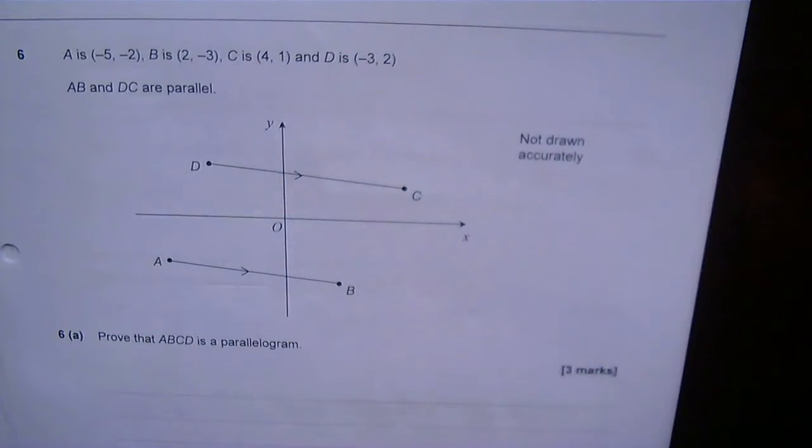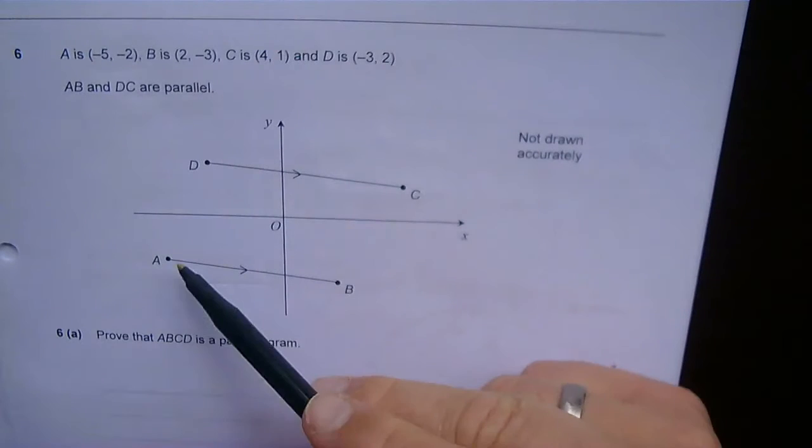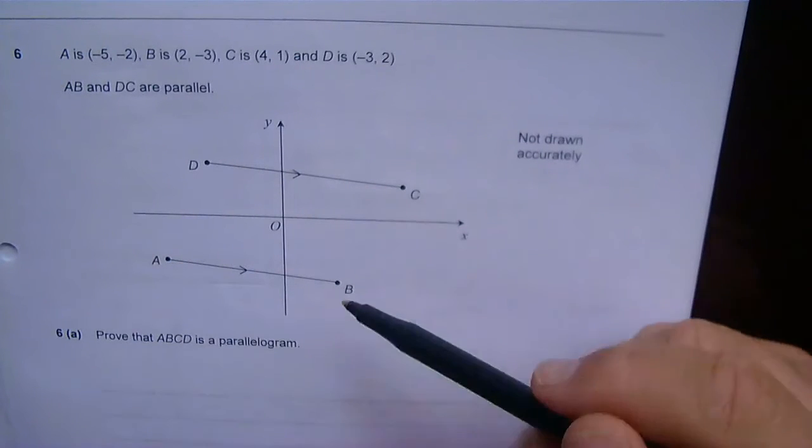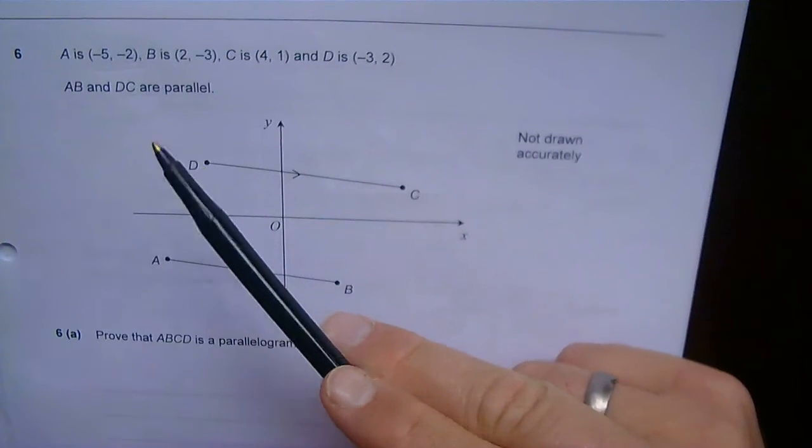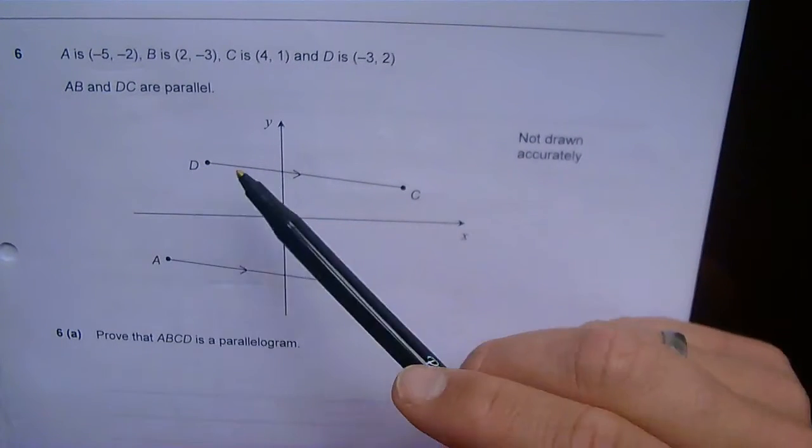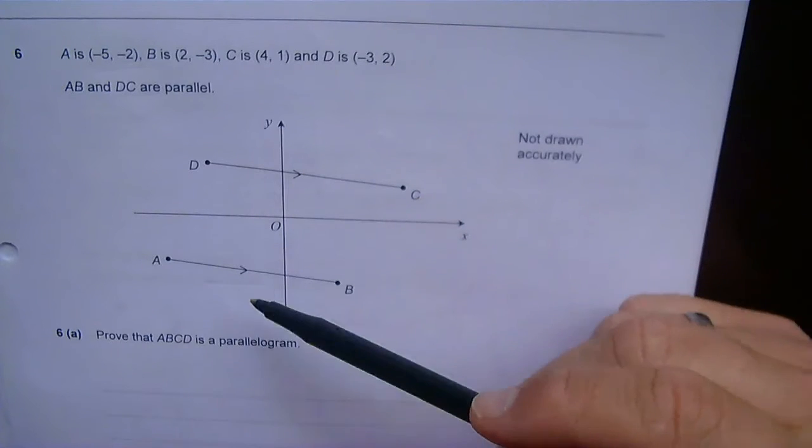Question 6. A is (-5, -2), B is (2, -3), C is (4, 1), and D is (-3, 2). AB and DC are parallel, which is shown with these little arrows. Prove that ABCD is a parallelogram.